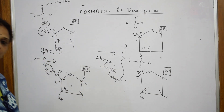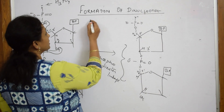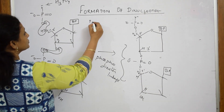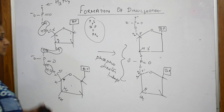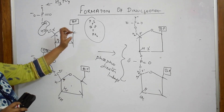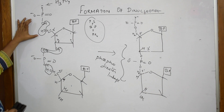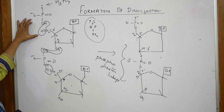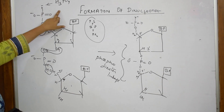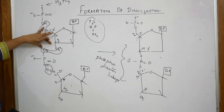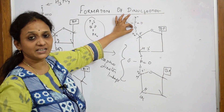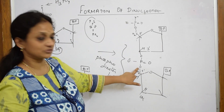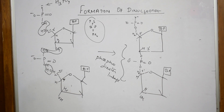Remember: whenever the formation of a dinucleotide is given, first write what it contains — pentose sugar, base pairs, and phosphate linkages. Then draw one pentose sugar and one more pentose sugar, show the purines and pyrimidines linkage (A with T, G with C), draw the phosphoric acid, take out water molecules, and link phosphorus to CH2 by oxygen — the diester bond. This is how we show the formation of a nucleotide.